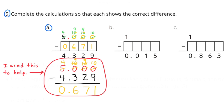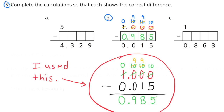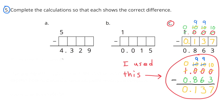Number 5. Complete the calculations so that each shows the correct difference. A. 5 minus what number equals 4 and 329 thousandths? I subtracted 4 and 329 thousandths from 5 to figure out what the missing number would be. B. 1 minus what number equals 15 thousandths? I subtracted 15 thousandths from 1 to figure out what the missing number would be. C. 1 minus what number equals 863 thousandths? I subtracted 863 thousandths from 1 to figure out what the missing number would be.